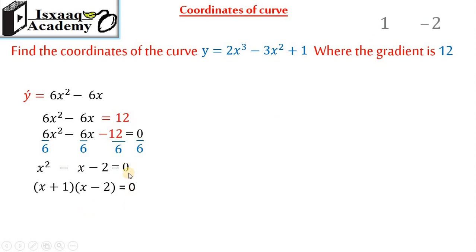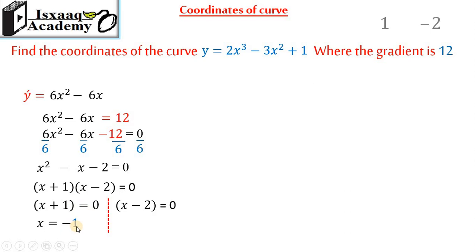We set each factor equal to 0. The number of x plus 1 equals 0, and x minus 2 equals 0. The number of x plus 1 gives x equals negative 1. The negative 2 becomes 2. So x equals 2.